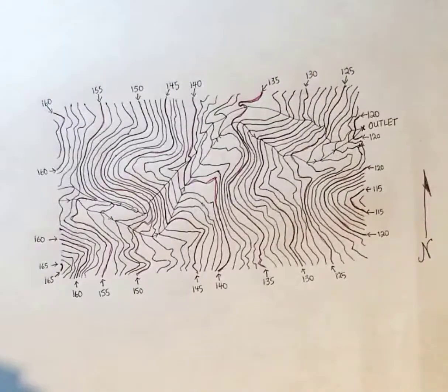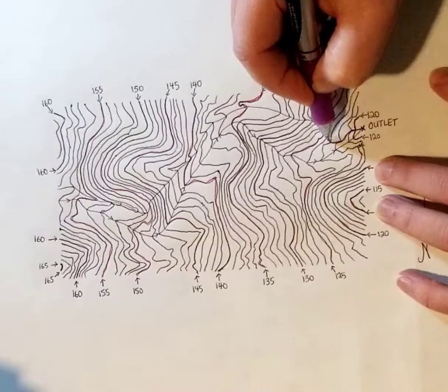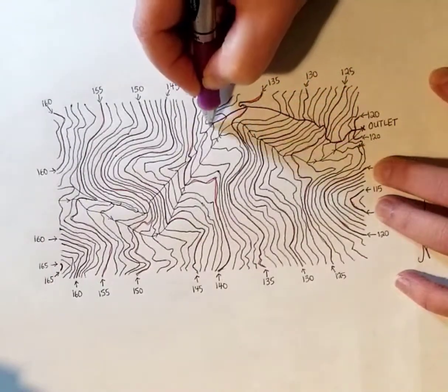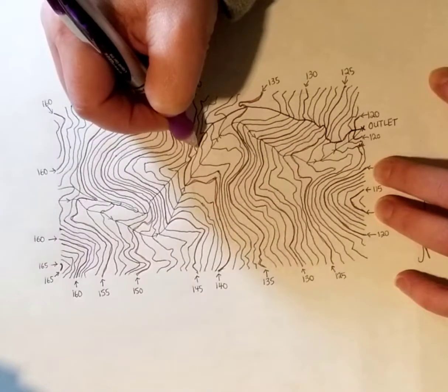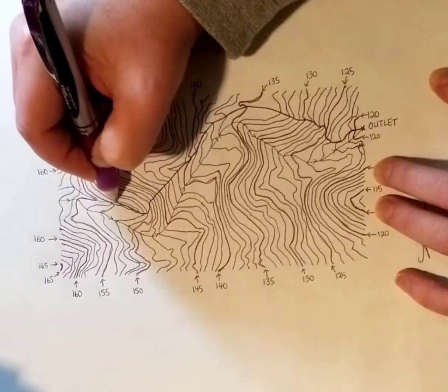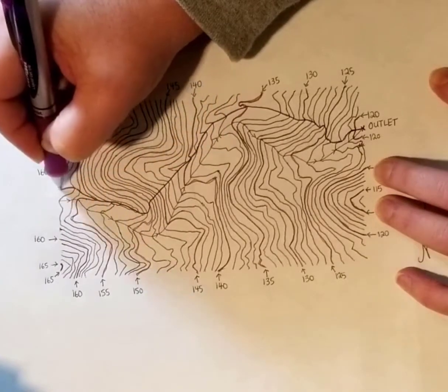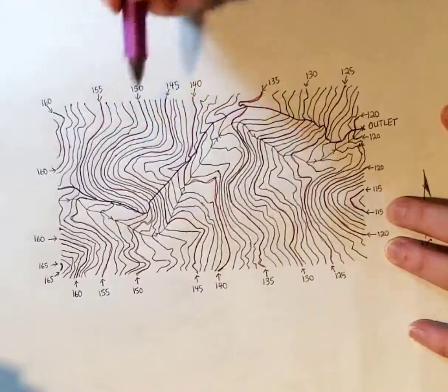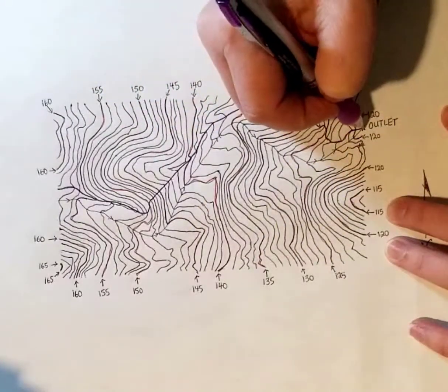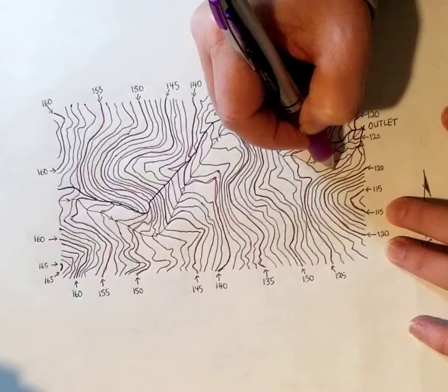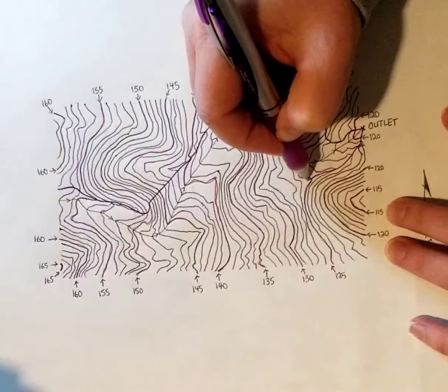So it follows in between like that. All right, and I'm going to go ahead and make that purple. Okay, so now let's do the other side. We've done the north ridge, and now we're going to do the south ridge. Remember, we're just following those U's.